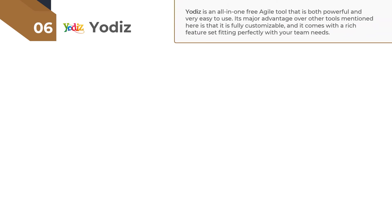On number 6 of our list for the best Scrum tools is Yodiz. Yodiz is an all-in-one free agile and comprehensive Scrum tool that is both powerful and very easy to use. Its major advantage over other Scrum tools is that it is fully customizable — you can easily create custom fields, board layouts, change board colors, and much more. Moreover, it comes with a rich feature set fitting perfectly with your team's needs, which would make the whole Scrum implementation process quite seamless.